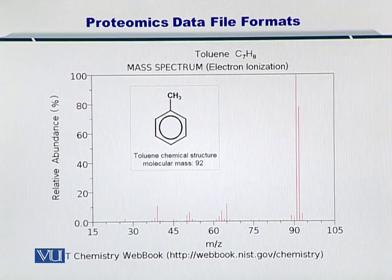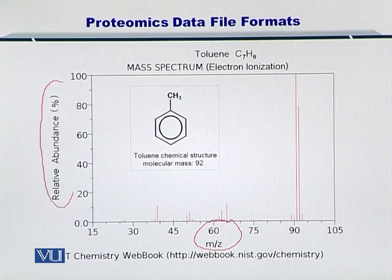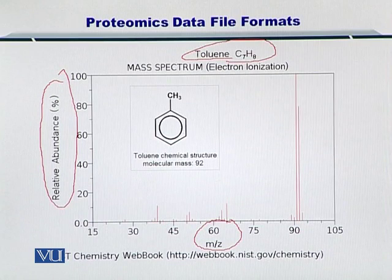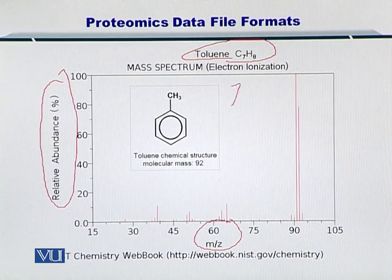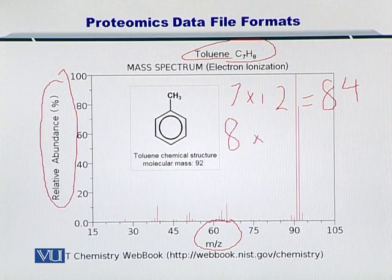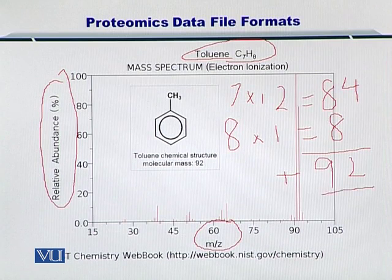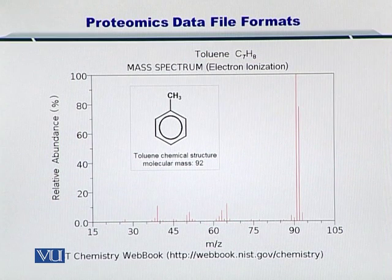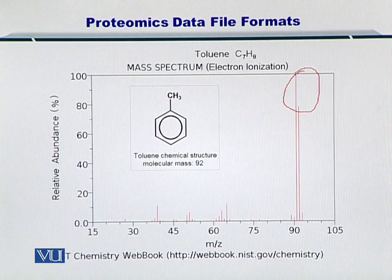In this slide, I am showing you a mass spectrum. On the horizontal axis, we have the mass over charge ratio, and on the vertical axis, we have the relative abundances. In this case, the molecule is toluene C7H8. The molecular weight is calculated as 7 atoms of carbon multiplied by 12, which equals 84, plus 8 atoms of hydrogen multiplied by 1, which equals 8, giving a total molecular weight of 92. You can see peaks here very close to 90 or 92, as this molecule may have been protonated or deprotonated to be represented by these two peaks.